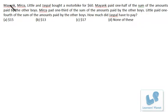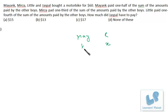Problem on ratio and proportion: Mayank, Mirza, Little, and Jaspal bought a motorbike for $60. Mayank paid one-half of the sum paid by the other boys — so Mayank's share relative to the rest is 1:2, meaning Mayank pays one-third of total = $20. Mirza paid one-third of the sum paid by the others — ratio 1:3, so Mirza pays one-fourth of total = $15.